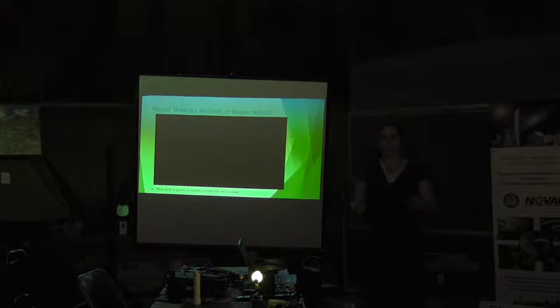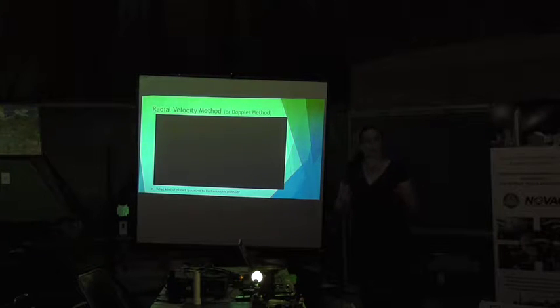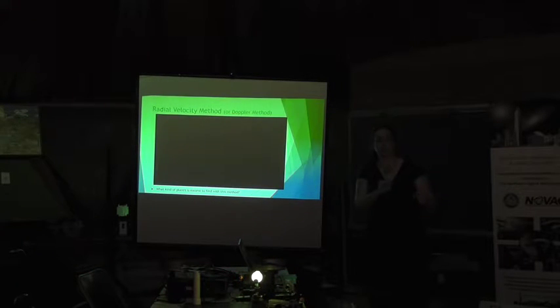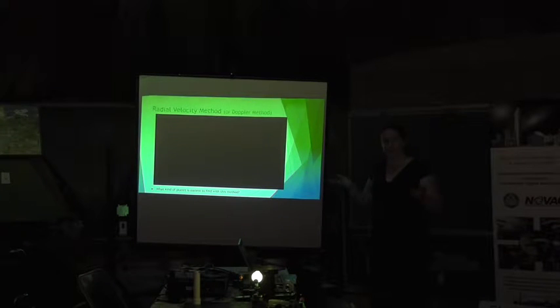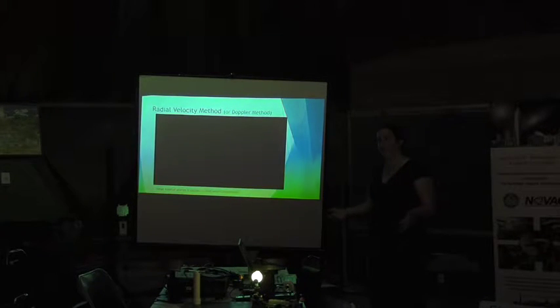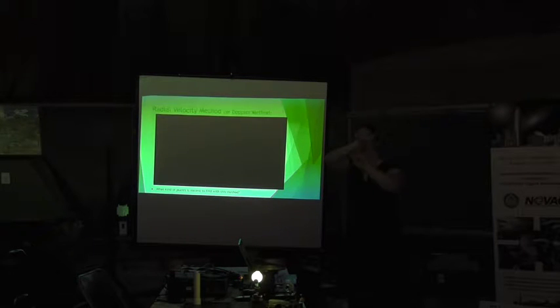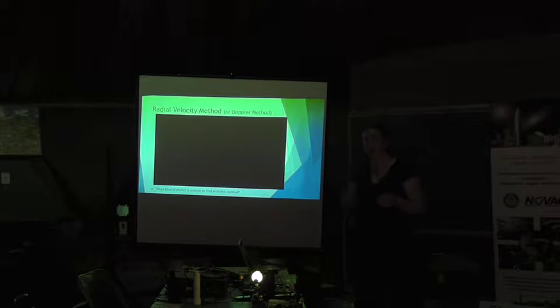Any other characteristics that would make a planet easy to find with the radial velocity method? A short period — so close to the star, meaning it has a short year. The closer the planet is to the star, the faster it will make the star wobble and the more it will. Whereas if it's far out, its gravitational influence is not as great. So this method is good for finding large planets that are close to the star. It also helps if the orbit is somewhat aligned with our line of sight, since you need the star wobbling toward and away from you.